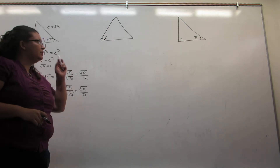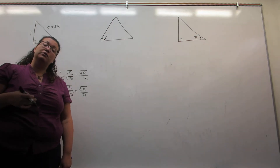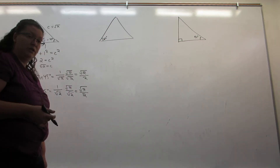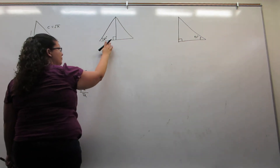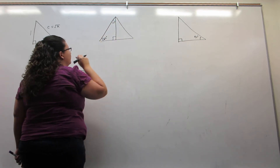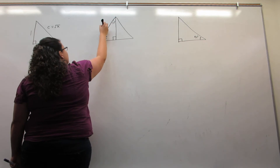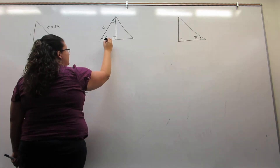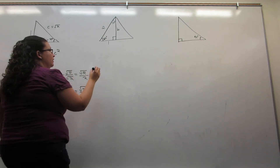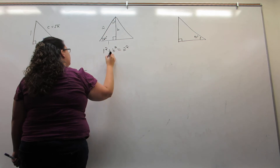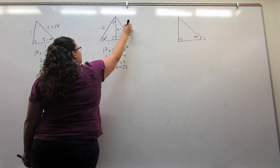Now consider another triangle. This one is going to be an equilateral triangle, so all the angles are 60 degrees. Unfortunately it's not a right triangle, which means we can't use the definitions we have of the six trigonometric functions on it. So what we are going to do is drop an altitude. It cuts the base in half and the angles in half, so this angle is now 30 degrees. I'm going to give the equilateral triangle side length 2. Since the altitude cut the base in half, this side now has length 1. Using the Pythagorean theorem, I get that the third side is the square root of 3.